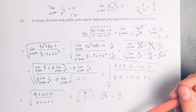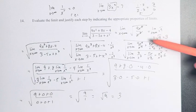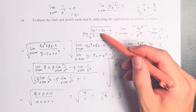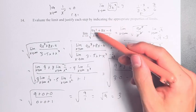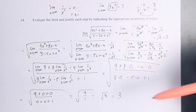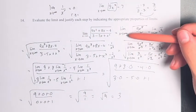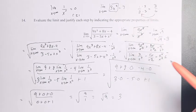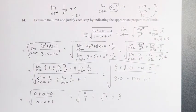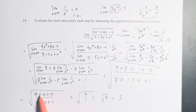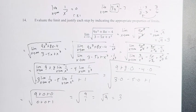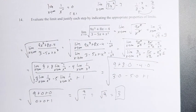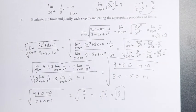This longer version proves why we can simply drop the lower-degree terms and treat the limit as just the square root of 9x³ over x³. The actual properties of limits confirm those other terms become zero. Whether you do it the short way or the long way, you get that the limit is equal to 3. Thank you very much.